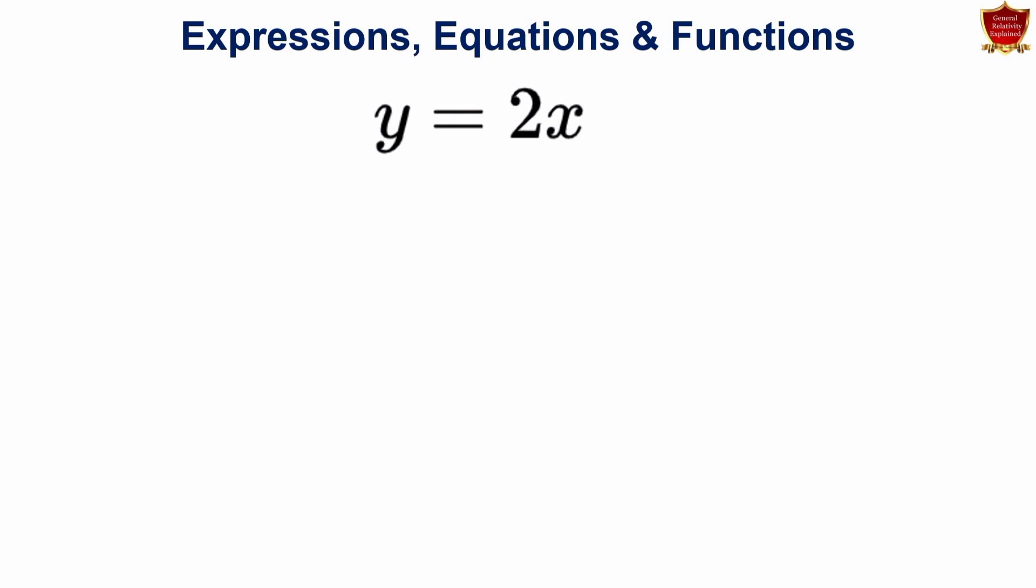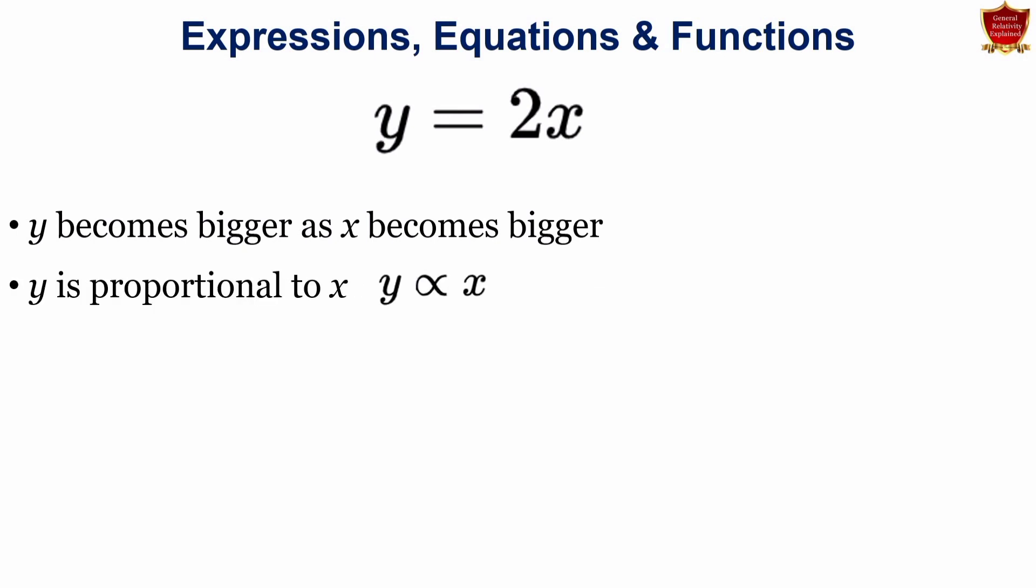Let us see few functions. If you see y equals to 2 of x, what does it implies is that y becomes bigger as x becomes bigger. Y is proportional to x which is denoted by this proportional symbol. When the value of x equals to 0, then y equals to 0 and there is a value of y for every value of x. So what I was telling is that in case that we get a function, we ask those questions that how does the function change? How does it ever equal to 0? So you see that these are the few examples which actually tells how the function behaves and what is deal with.